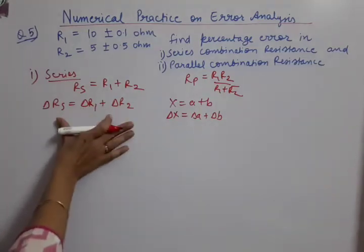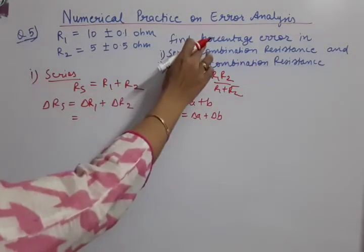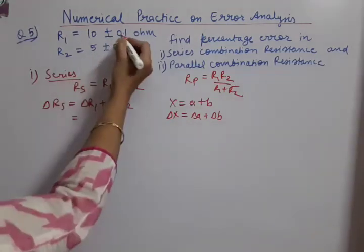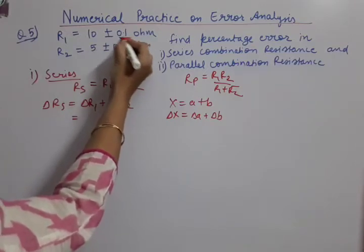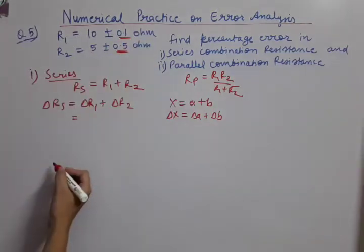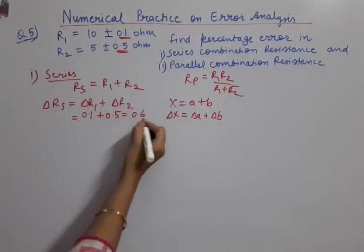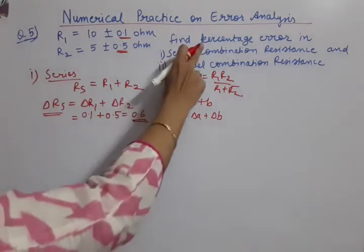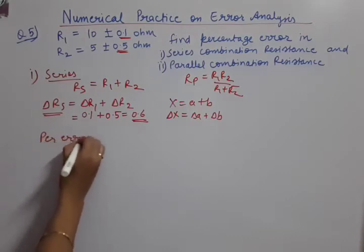As the error expression. So here also I have to write absolute error expression because this is addition. Now, this is error expression written. Now, I will just put here the values and according to the given question, I will proceed. So what is delta R1? So you see, I have told you, whatever is written after plus minus, that means the small value, that is delta. So this is delta R1 and this is delta R2. So delta R1 is 0.1, delta R2 is 0.5. So it will become 0.6. So delta Rs, that means absolute error of series is 0.6. But I am not asked the absolute error. I have to solve the percentage error.